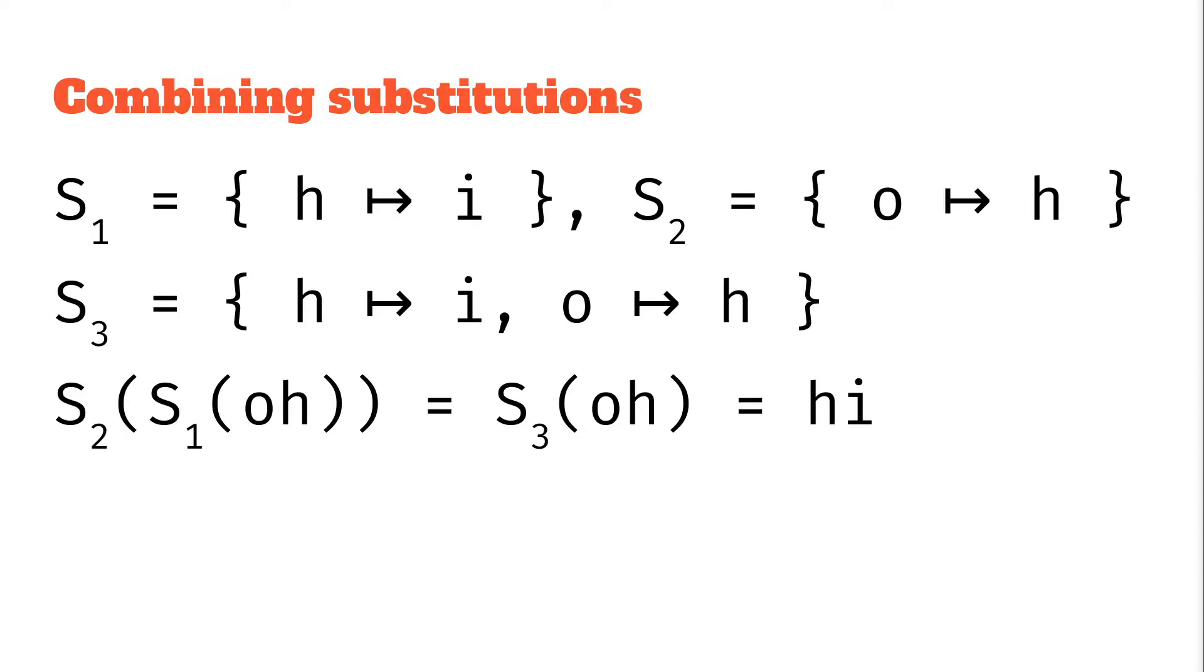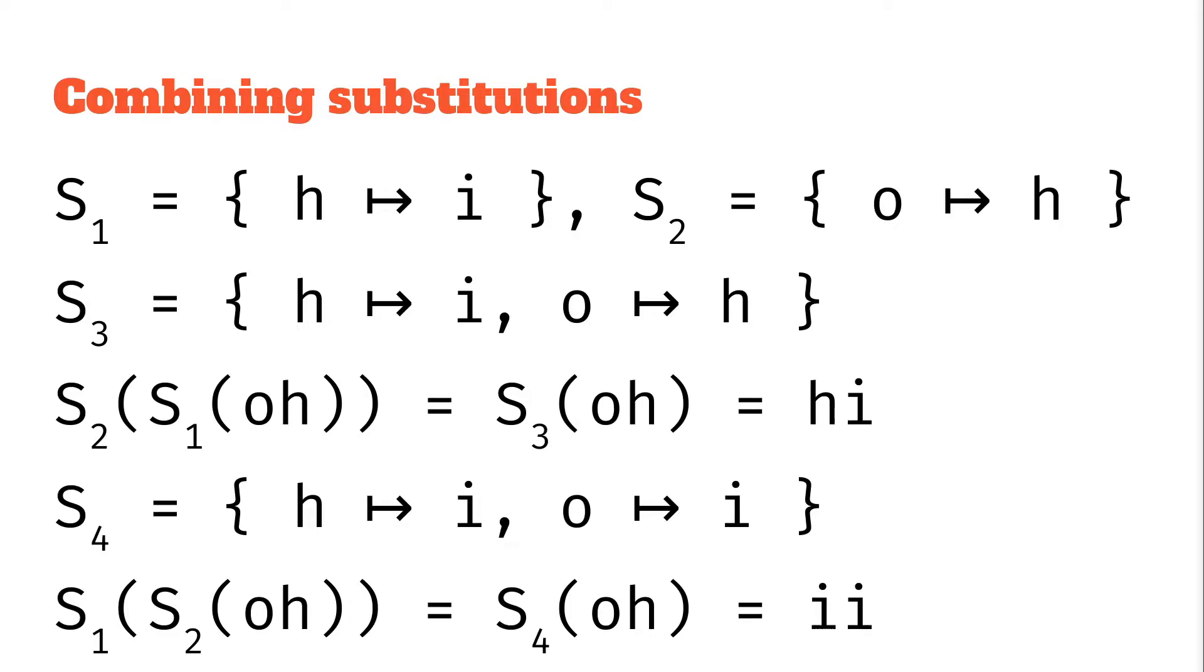However if you flip this around, what happens if you apply s2 first and then s1? If we applied s2 first we get o turns to h so we get the string hh. Then we apply s1 and h goes to i so we get the string ii. Obviously this has got to be a different combined substitution. So applying substitutions in different orders gets us different results. Therefore combining substitutions in different orders must be different. It's not a commutative operation. There is an s4 for this. It has turned the o into an i and the h into an i. That is our combined substitution.